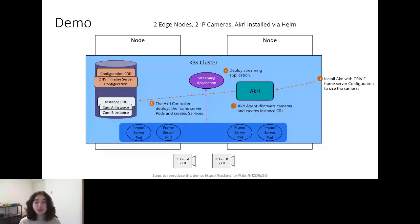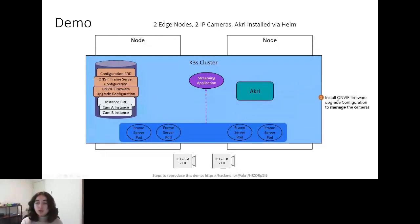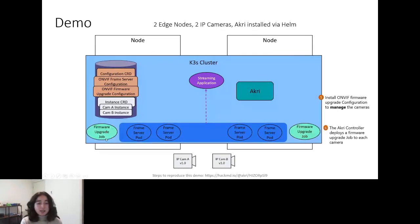Our streaming application will point to both of those services, giving us a feed showing all frames from all cameras and a feed showing one feed from each camera. We'll have created a scenario where this application is benefiting from the work Akri's done. Then we'll take it one step further and show how we can use Akri to manage these devices by performing a firmware upgrade. We're going to install another configuration — an upgrade configuration that specifies an upgrade broker — and the controller will ultimately deploy jobs that upgrade these cameras to version 2.0.